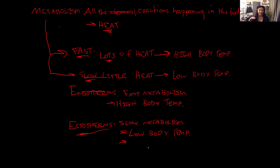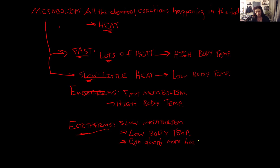It's not good to have a low body temperature all the time — it literally slows you down. However, ectotherms can get heat elsewhere: they can lay out in the sun or on a hot rock or road and absorb heat from their environment. That will elevate their body temperature and speed up the chemical reactions happening in their body, allowing their muscles to move faster. So ectotherms, even though they don't produce very much of their own body heat, can absorb additional heat from their environment.